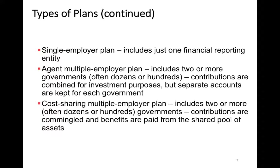The big difference in terms of type affecting the standards is if a government is in a cost-sharing multiple employer plan. Like an agent multiple employer plan, there's more than one financial reporting entity in the plan — often hundreds or thousands. Not only do they pool contributions for investment purposes, but the benefit payments are made out of that common pool of assets. There are no separate accounts kept for each of the participating employers.